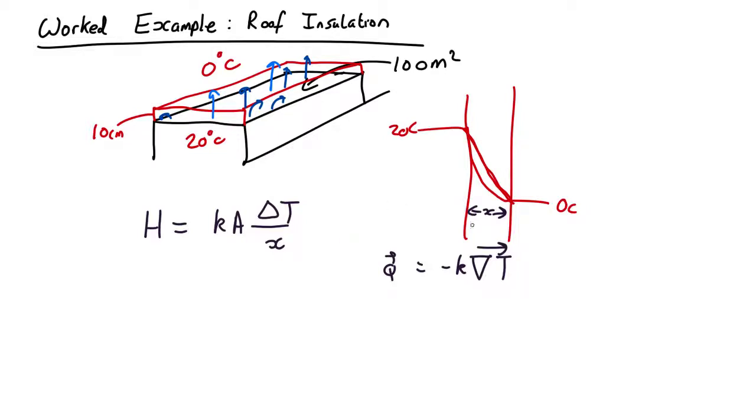and X is going to be 0.1. K is the conductivity. This is heat flow per unit area, whereas that's total heat flow, so we need to put the area over here.